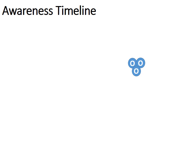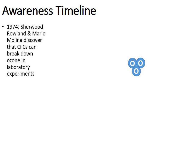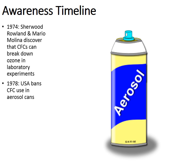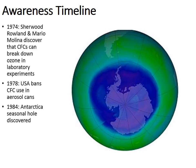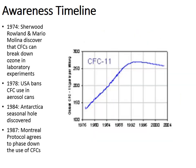I'd like to finish with an awareness timeline that brings us to where we are today. In 1974, a couple of scientists discovered that chlorofluorocarbons — particularly the chlorine from a CFC — can break down ozone, setting us down a path to finding a resolution. In 1978, the United States banned the use of CFCs in aerosol cans, a ban still in existence today. In 1984, a seasonal hole in the ozone layer was discovered over Antarctica. Then in 1987, an international agreement known as the Montreal Protocol agreed to phase down the use of CFCs. You can see in the graph the amount of CFCs rises until the 1990s, then starts to flatten out and even decrease.